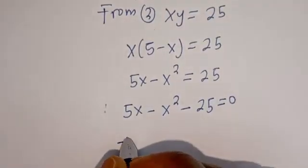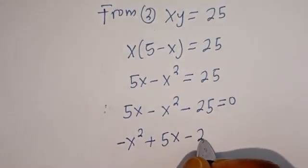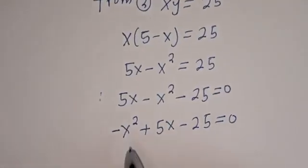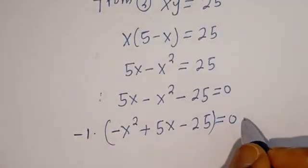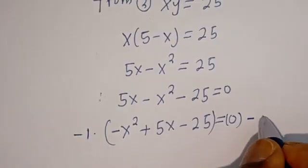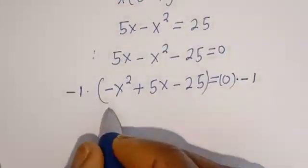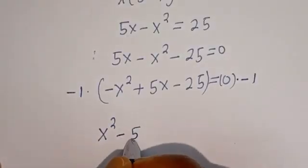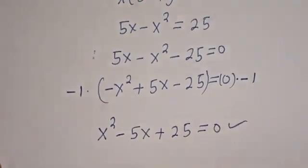Then we can rearrange this: we have minus x squared plus 5x minus 25 is equal to 0. Let's multiply all terms by minus 1 — multiply this by minus 1, and multiply this by minus 1. So this becomes x squared minus 5x plus 25 is equal to 0. This is a quadratic equation, which can be solved using the quadratic general formula.